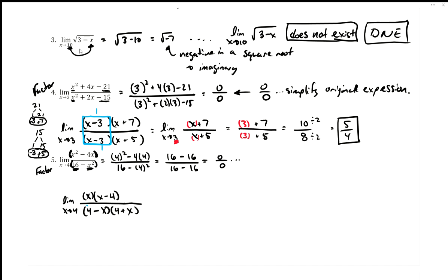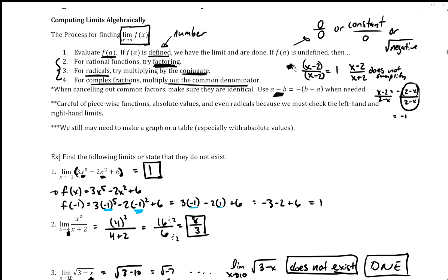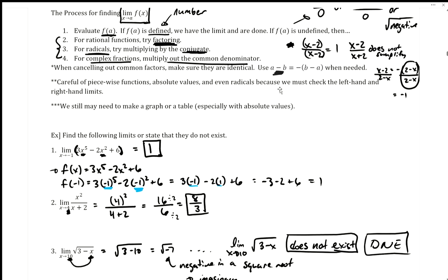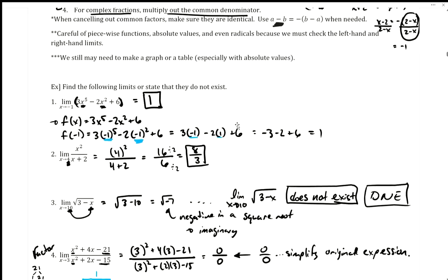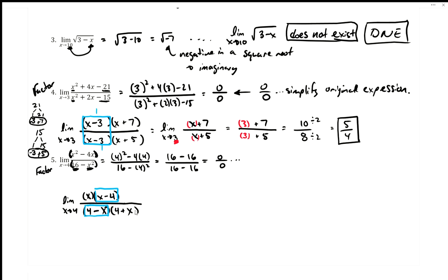Now, (x - 4) and (4 - x) are similar but not identical — to cancel, they must be identical. So I'll use a trick: factor a negative out of (4 - x), which gives -(x - 4). To double-check: bringing the negative back in gives -x + 4, which matches (4 - x). This rearrangement is valid.